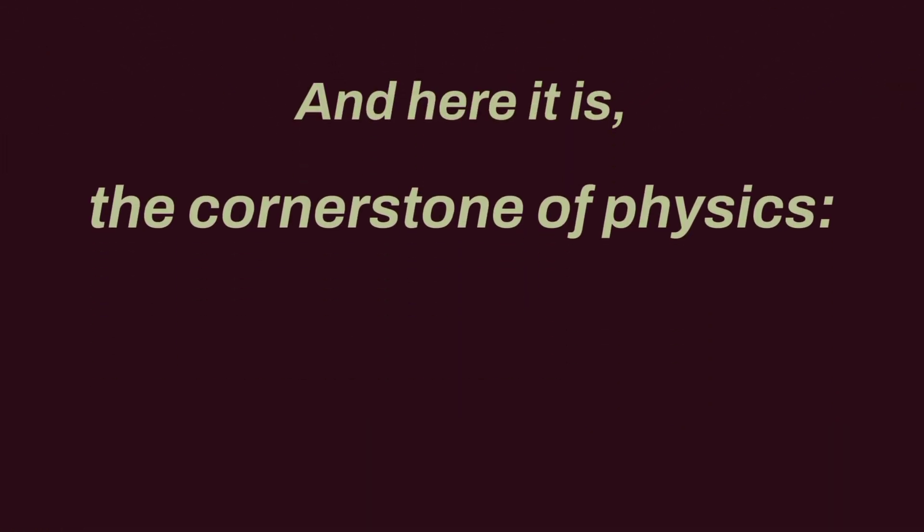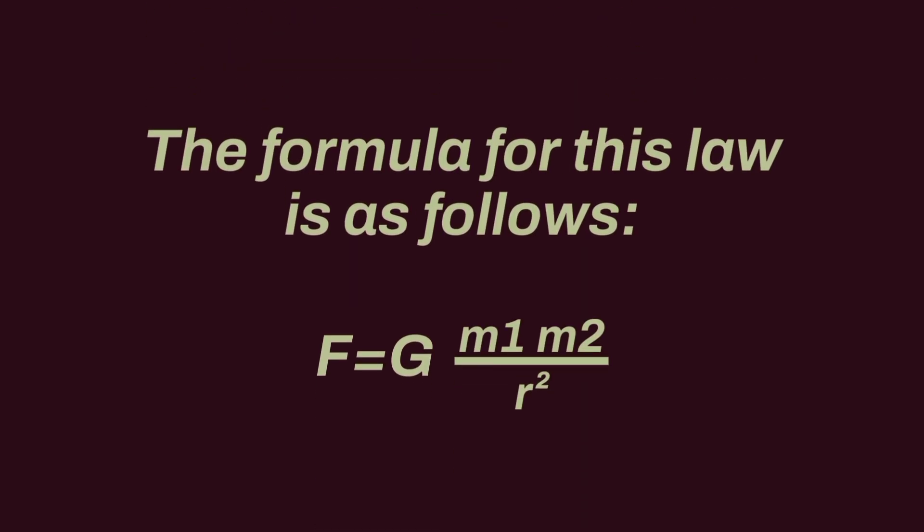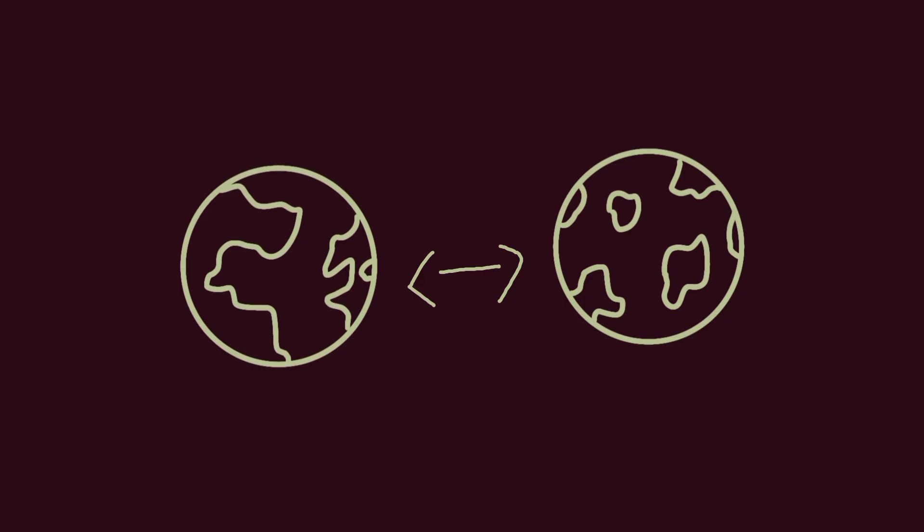He decided to solve the massive secret behind this simple event. And here it is, the cornerstone of physics: the law of universal gravitation. The formula for this law is as follows. What does this mean? Don't panic, I'll explain it right away. This formula calculates the gravitational force that every two massive objects in the universe, in other words everything, exert on each other.